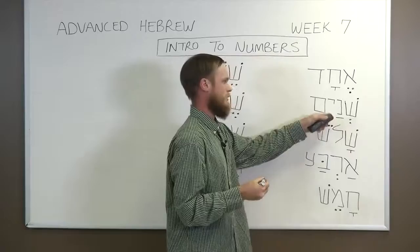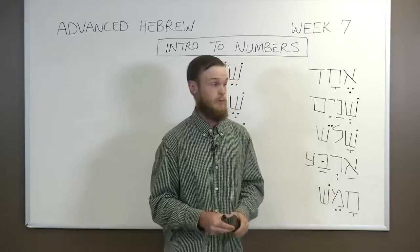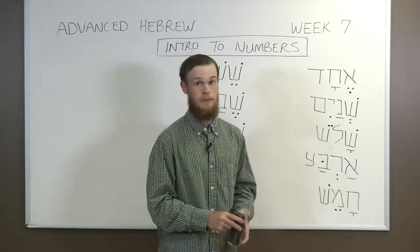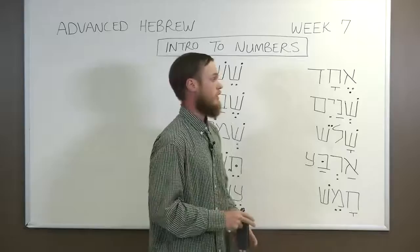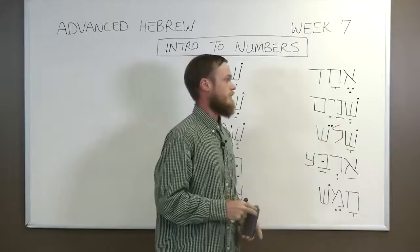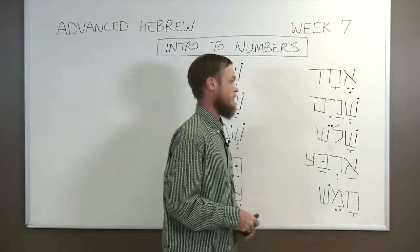Shenayim is written in the dual form with the ayim ending — patach, yod, chirik, mem. This is a specific form that means exactly two. The im — chirik, yod, mem — ending means more than one, but if we want to say exactly two, we can affix patach, yod, chirik, mem to the end of a noun, pronounced ayim instead of im. In the case of the number two, it has that ending, so we can't help but match the number we're talking about.